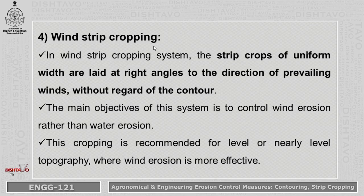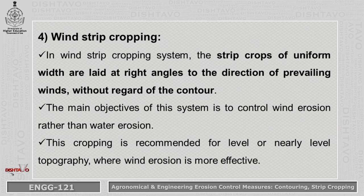The fourth type is Wind Strip Cropping. As the name suggests, it protects from wind. In this system, strips of uniform width are laid at right angles to the direction of wind without regard to the contour. The main objective is to control wind erosion rather than water erosion. This cropping is recommended for level or nearly level lands where wind erosion is problematic.